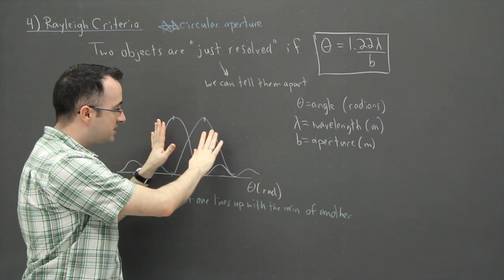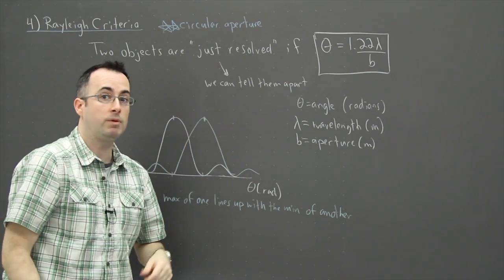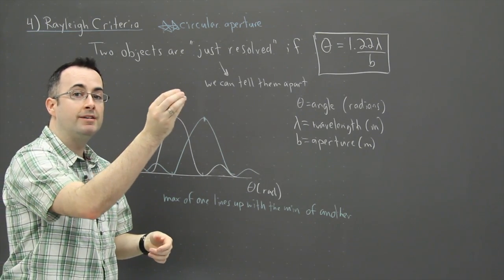So what happens then if the angle is smaller than that? Well, then we can't tell them apart. It's going to appear like just one dot.